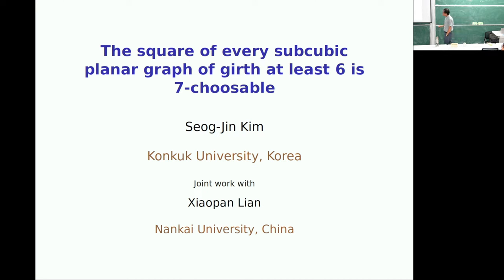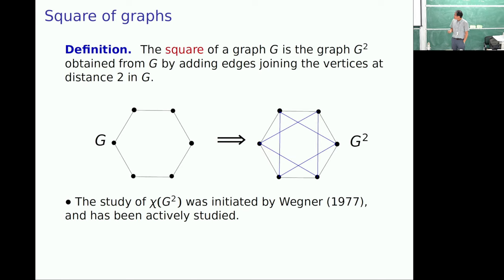This is joint work with Xiaofan Lian from Nanjing University. First, I hope many of you are familiar with the definition of square graph. Square graph is the vertex is the same as the original vertex, and then we have new edges. If the distance is at most two, then we add new edge. So this is original graph, and it is blue. You keep original graph, and the blue color is new edge.